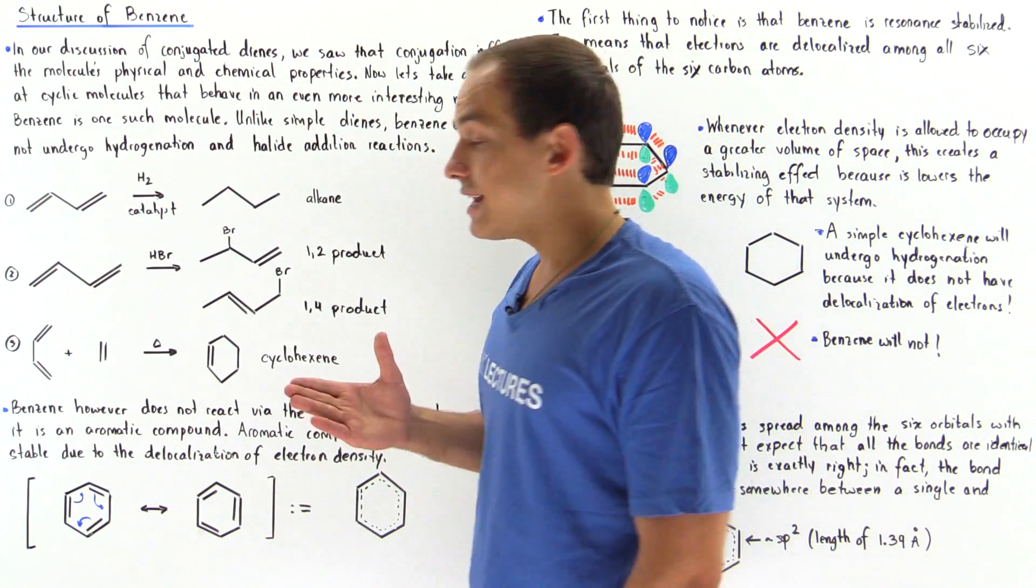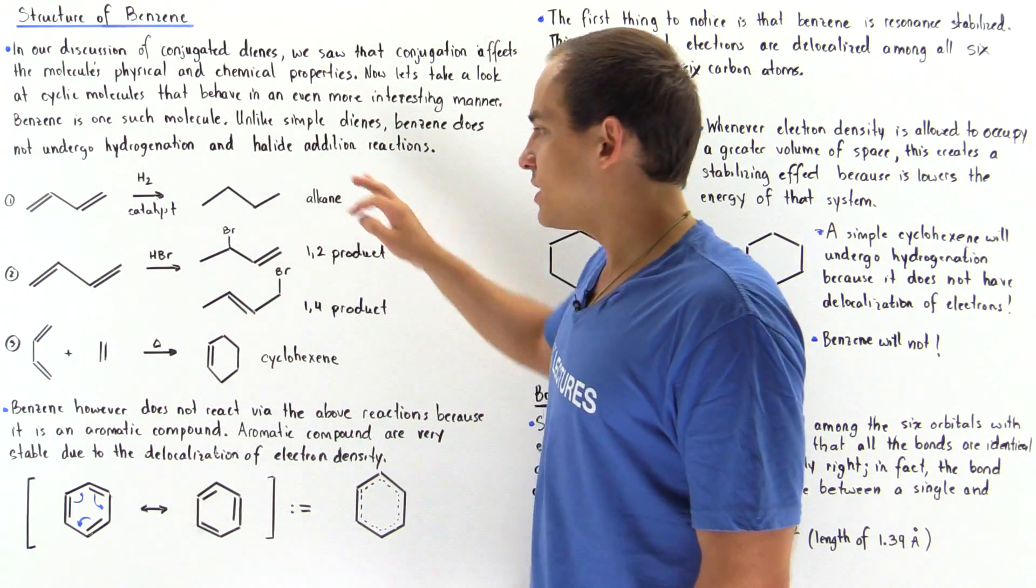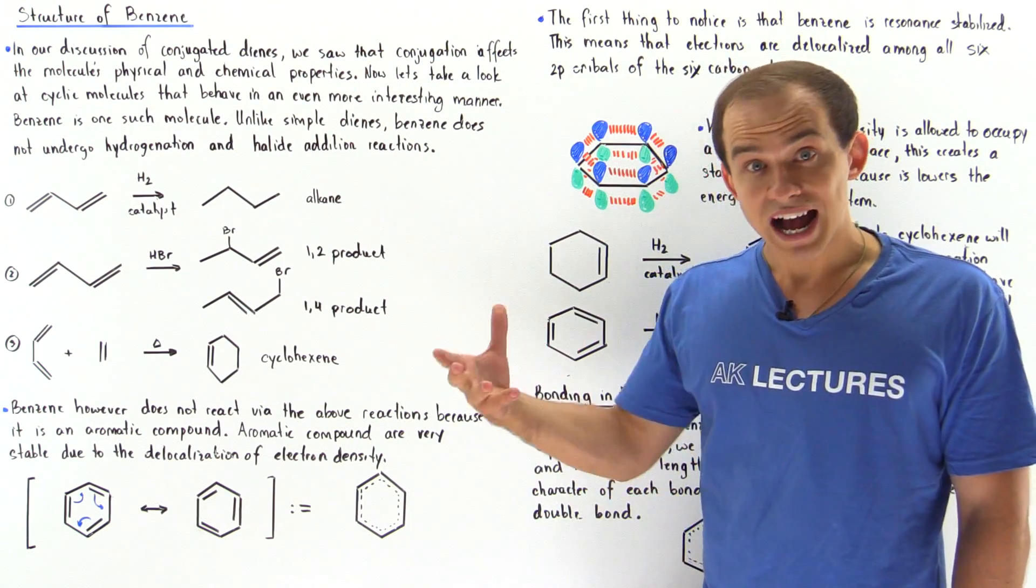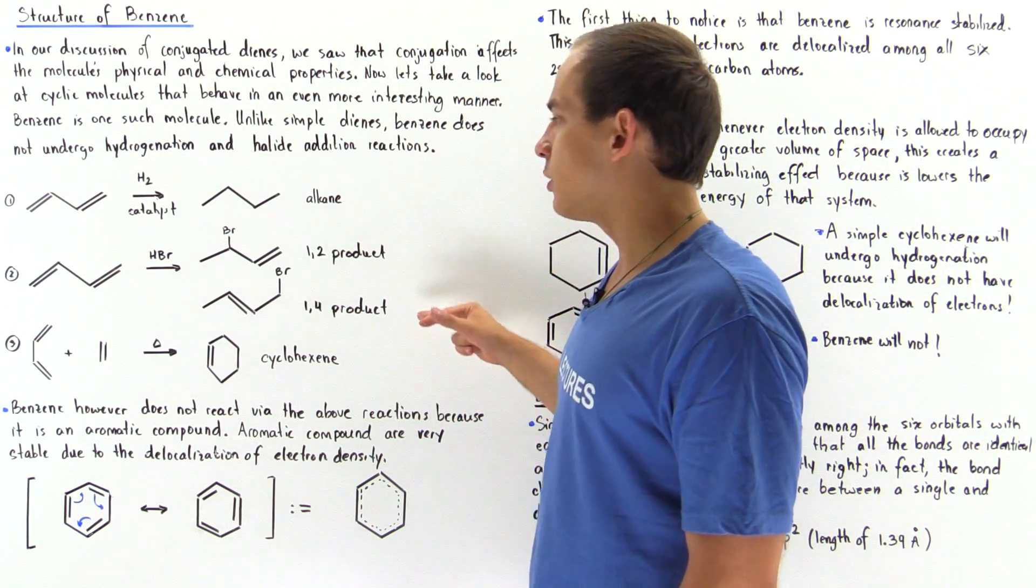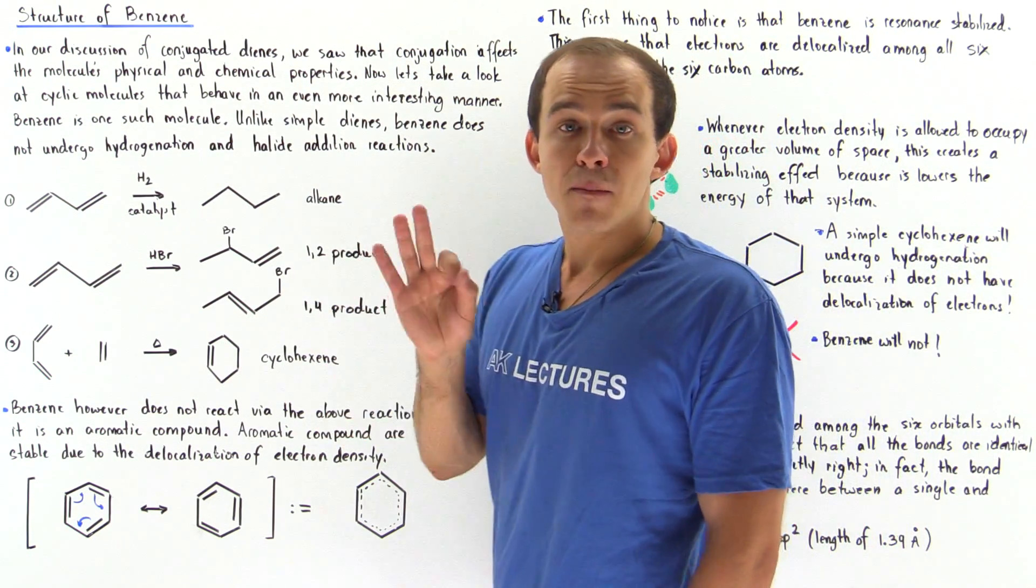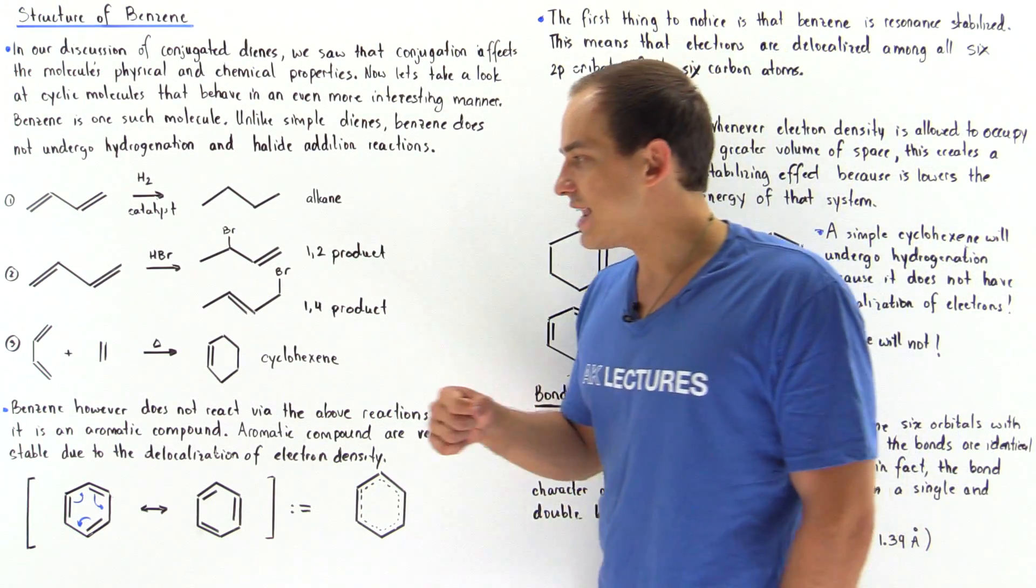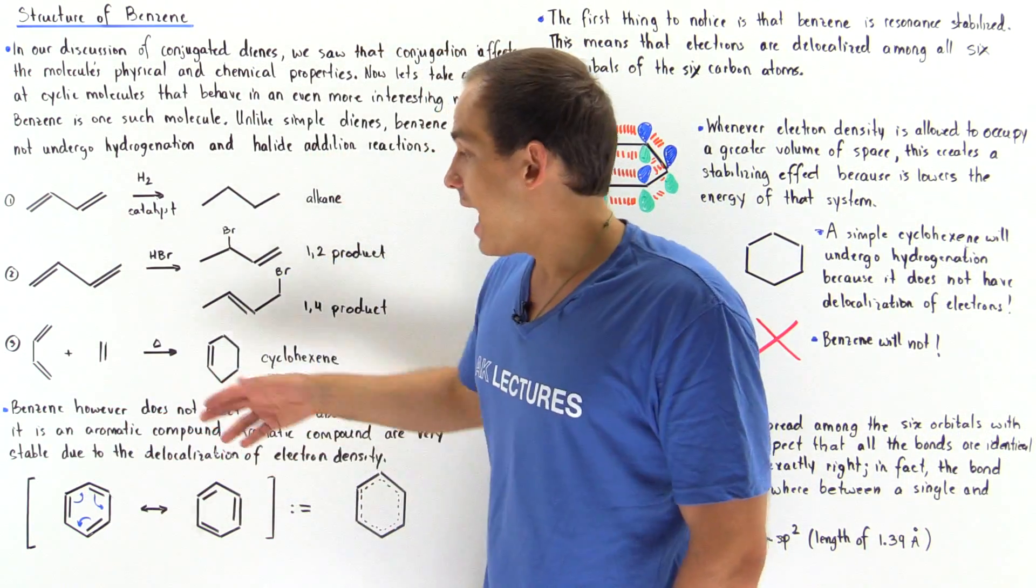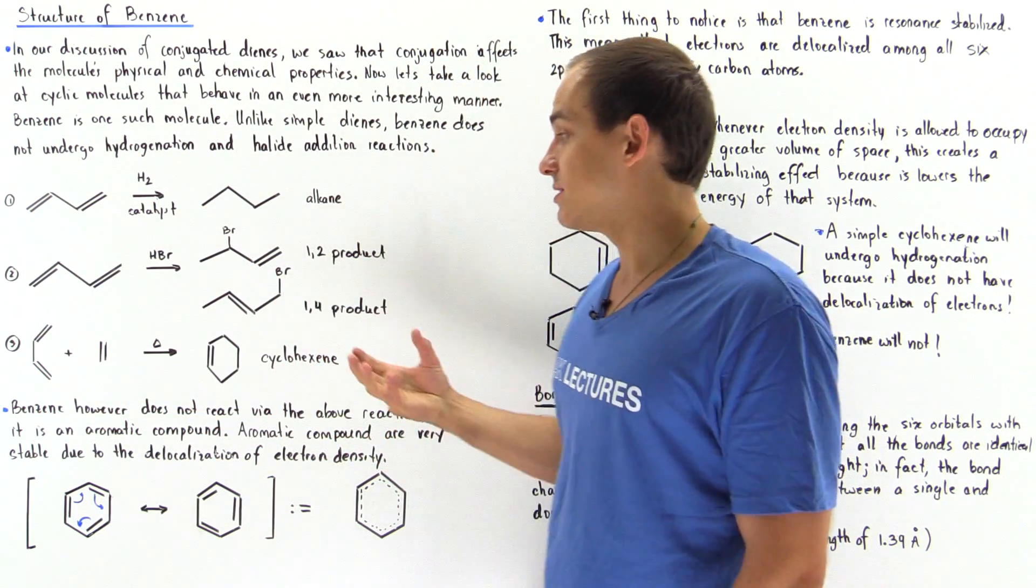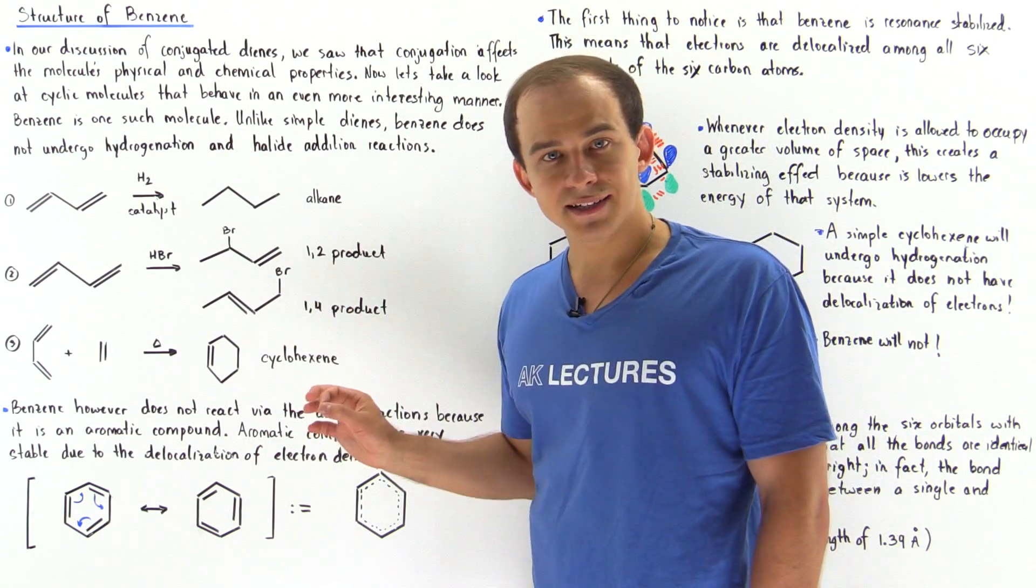Now we also said that if we take this 1,3-butadiene which is conjugated and we react it with HBr either in low temperature or high temperature conditions, we produce the following two products. So the 1,2-product and the 1,4-product. And most recently we discussed the Diels-Alder reaction. So basically the combination of our 1,3-butadiene and our dienophile, our simple alkene in the presence of some type of temperature, some amount of energy, we produce a cyclohexene.